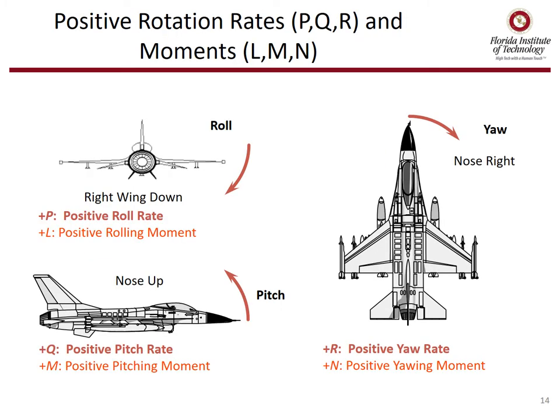We've already defined the moments L, M, and N. Now we'll look at positive rotation rates P, Q, and R and how they're defined. P is roll rate, defined positive with the right-hand rule. Q is pitch rate, positive with the right-hand rule — nose up. R is yaw rate, positive with the right-hand rule — nose right. So rotational rates P, Q, and R are in the same sense and direction as moments L, M, and N.